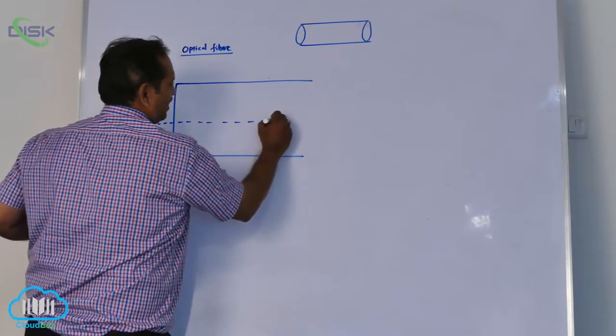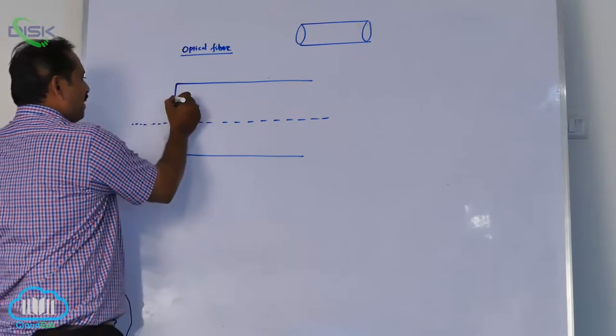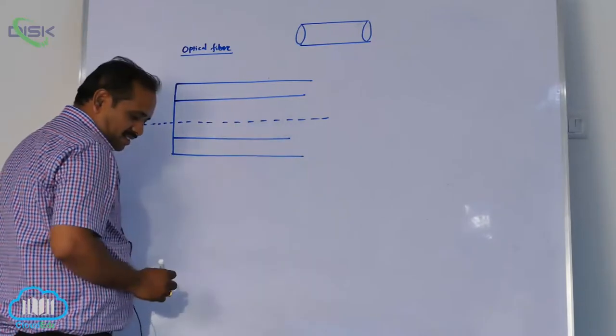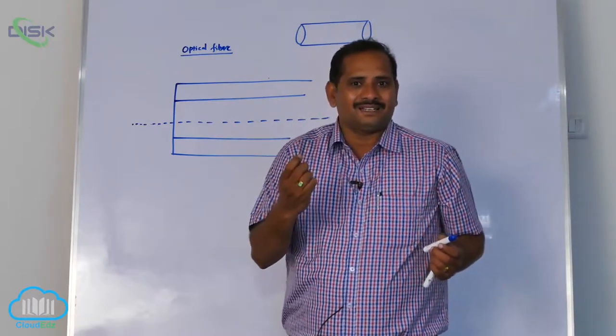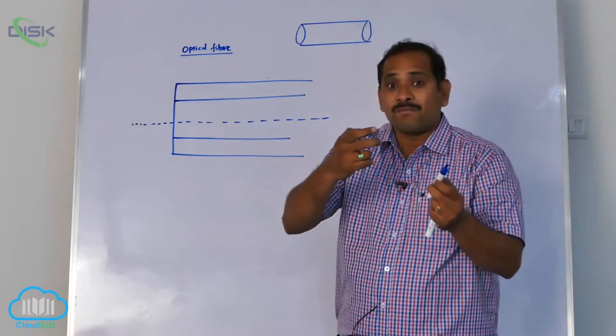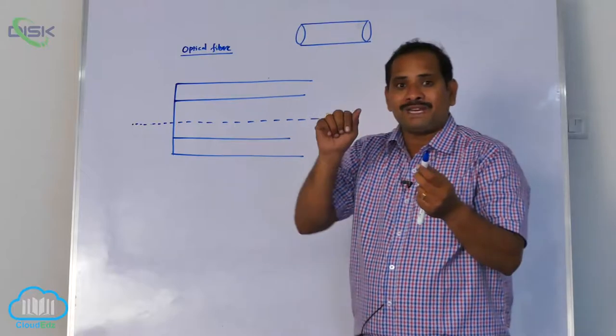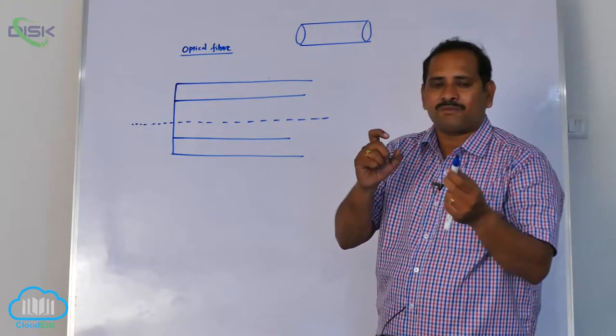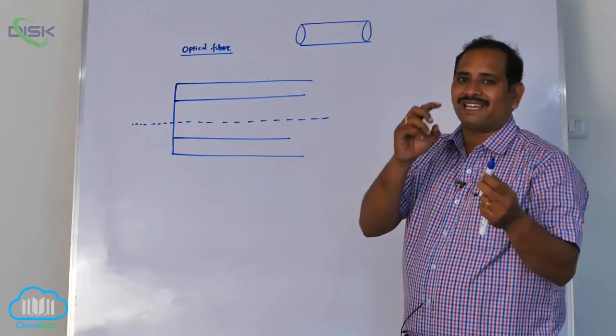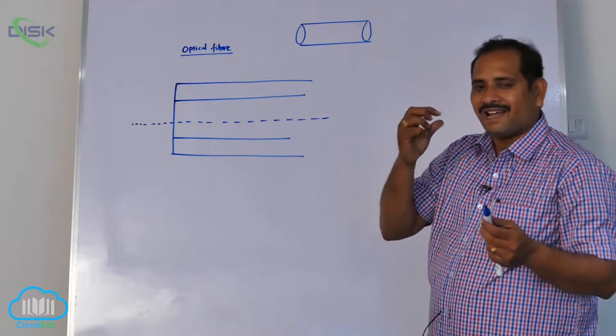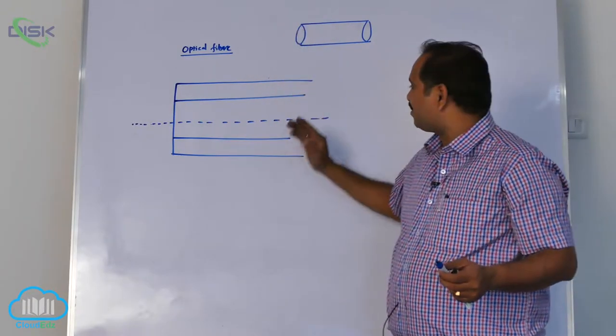Optical fiber consists of two coaxial cylinders. Best example for two coaxial cylinders is your television wire. If you observe the television wire, a black probe is there. If you cut the black probe, we are going to find aluminum wires and a white color probe. Then cut white probe, we are going to find copper wire. That system is coaxial cable. Like this, in the case of optical fiber also, coaxial cables.